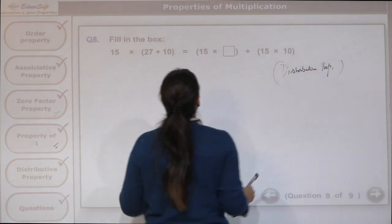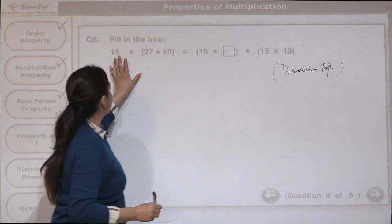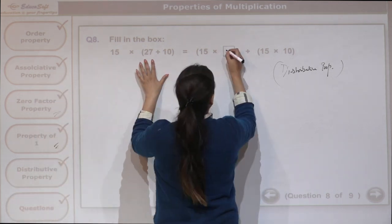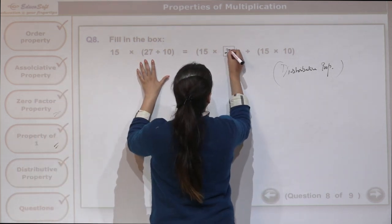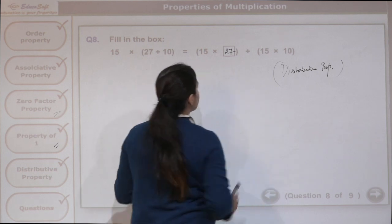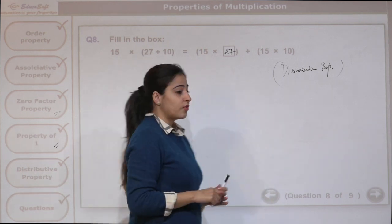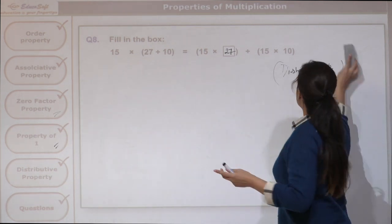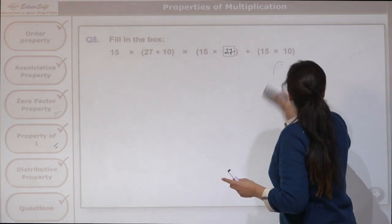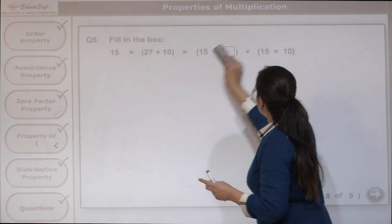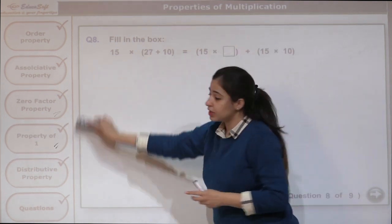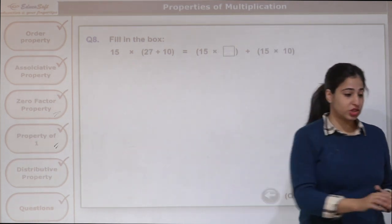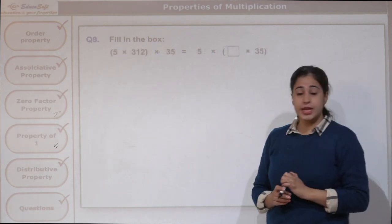So we are going to have 15 times 27. All the properties should be at your fingertips. Let us move to the last question.